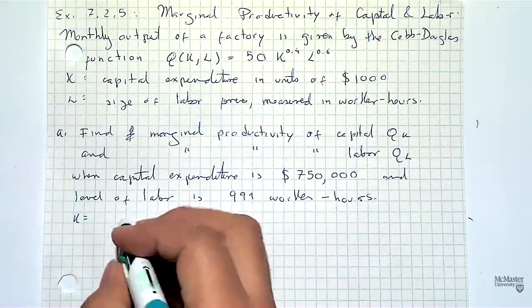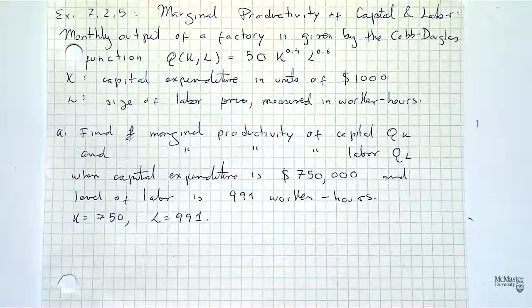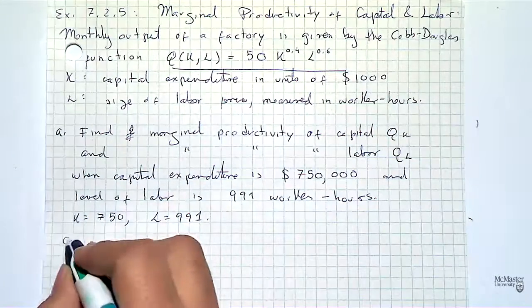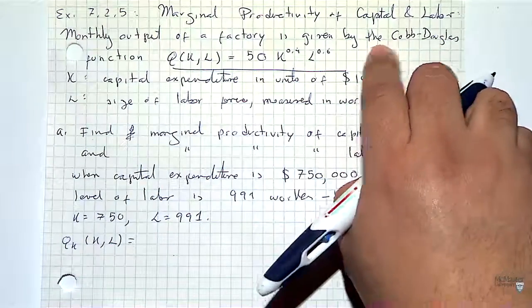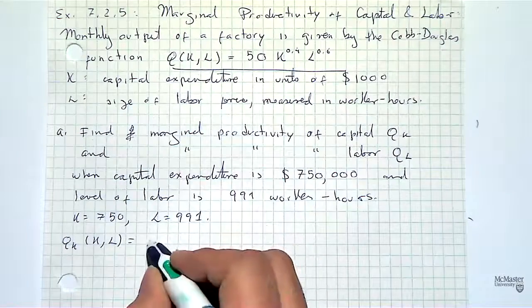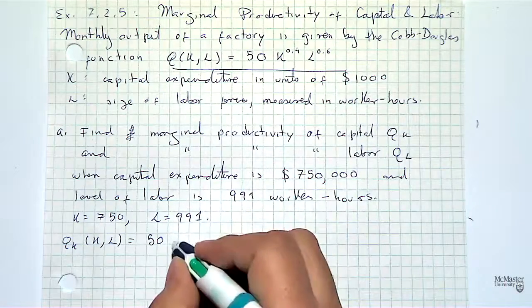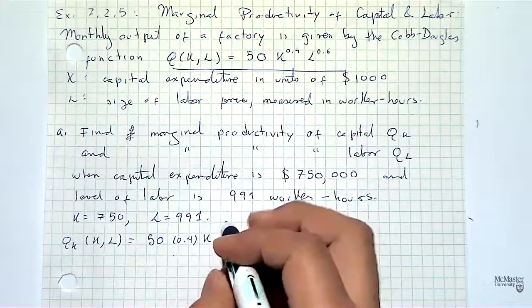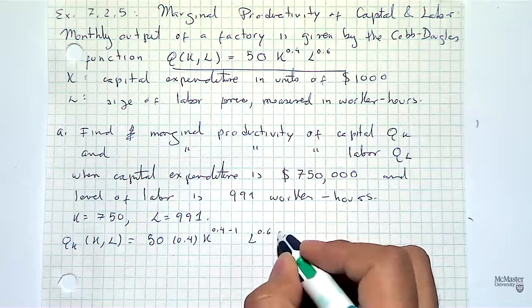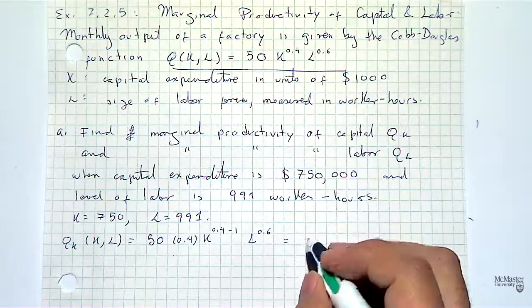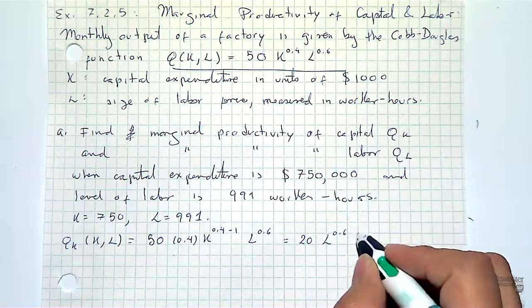The first statement is to find the marginal productivity of capital, which is the partial derivative of Q with respect to K, and also the marginal productivity of labor, the partial of Q with respect to L, when the capital expenditure is $7,750 — so K is 750 in our units — and the level of labor is 991 worker hours. Then we compute the partial derivatives.